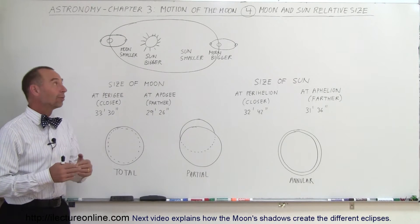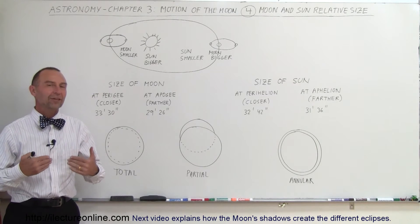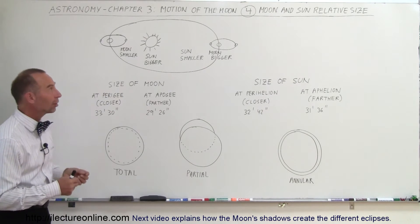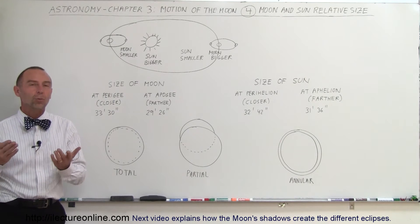Welcome to our Lecture Online and one of the ways in which we can understand why we have different kinds of solar eclipses, let's take a look at the Moon and the Sun's relative sizes.